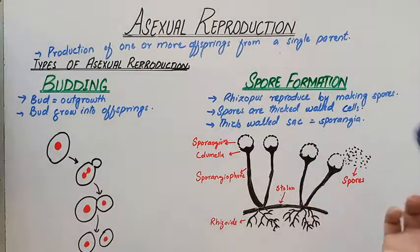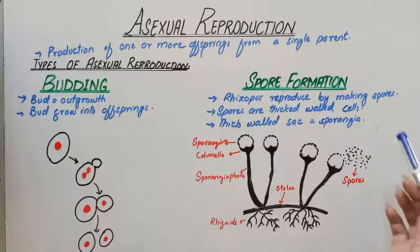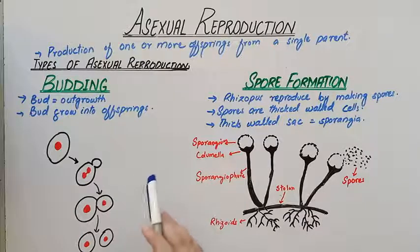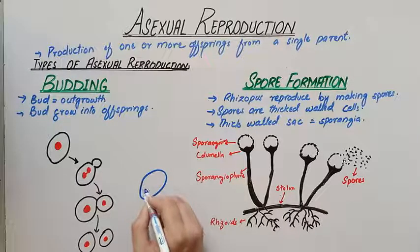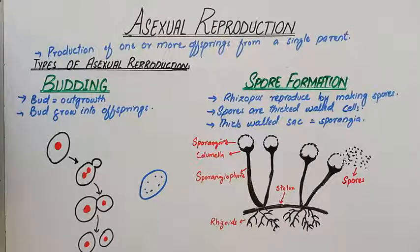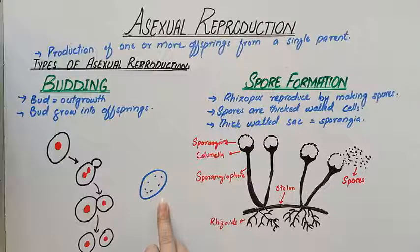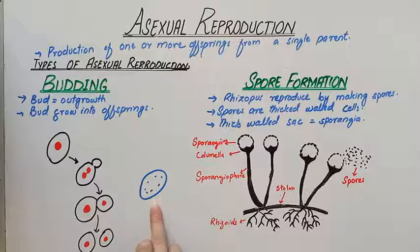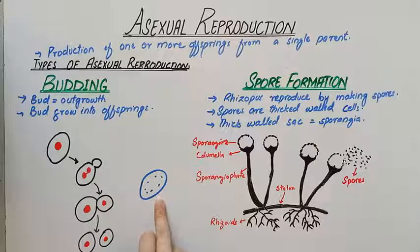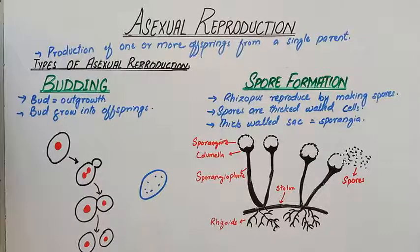We are taking the example of Rhizopus, but other fungi will also easily grow under these conditions. For general knowledge, some bacteria also form spores inside their cells, known as endospores. These are formed when bacteria face harsh or unfavorable conditions. When conditions become favorable again, these endospores germinate into a new bacterium.